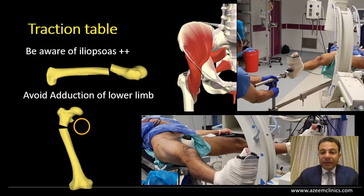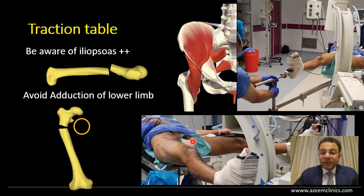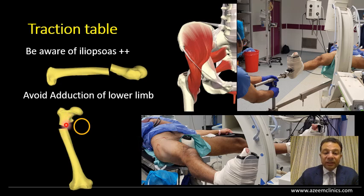Also be aware that while applying traction you are putting too much tension on the limb and tensioning the muscles. Once you put traction, the iliopsoas tension pulls the proximal fragment into flexion and external rotation. Also, the post used to stabilize the patient acts as a pivot at the fracture site, and once you adduct the limb to allow for a proper entry point you are actually deforming the fracture into more varus angulation.